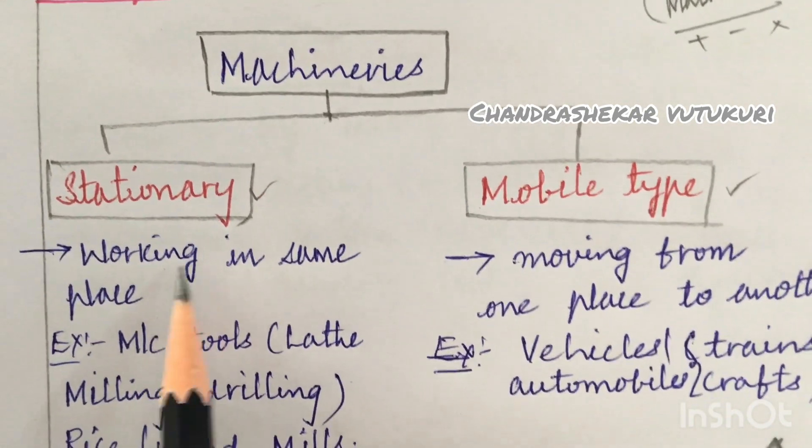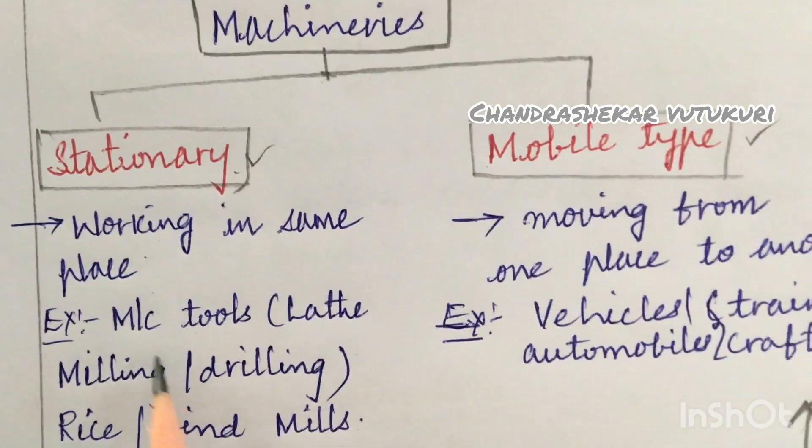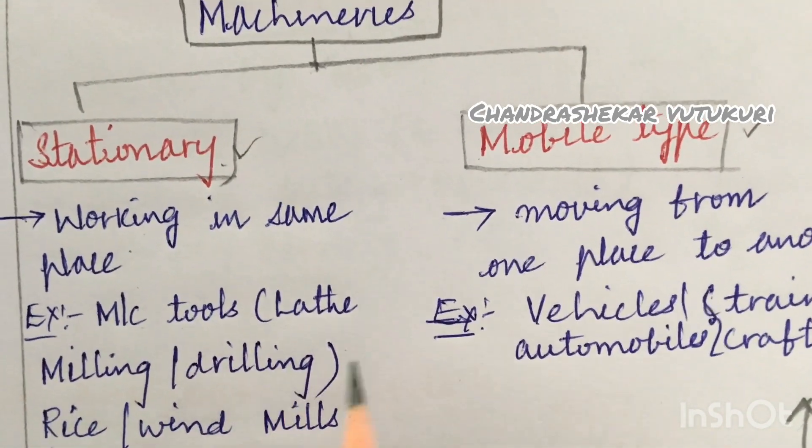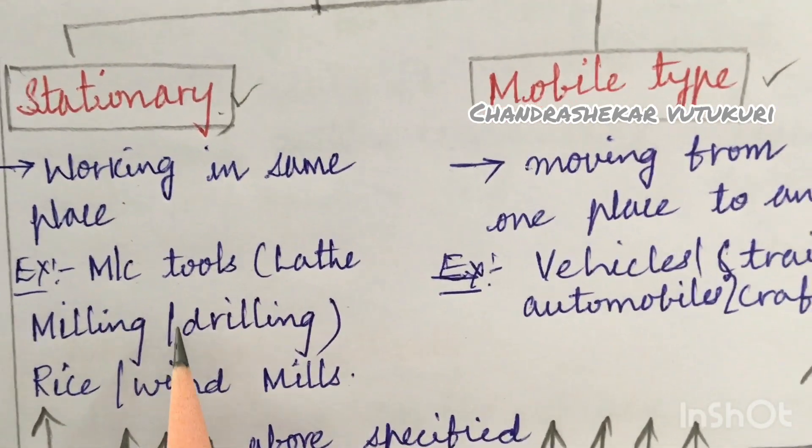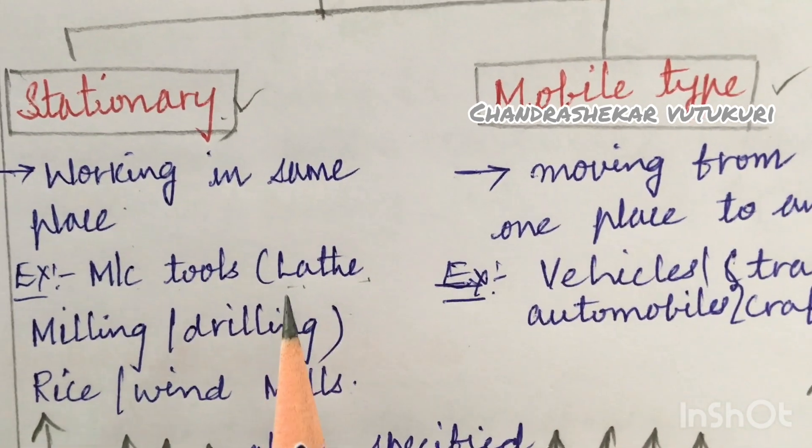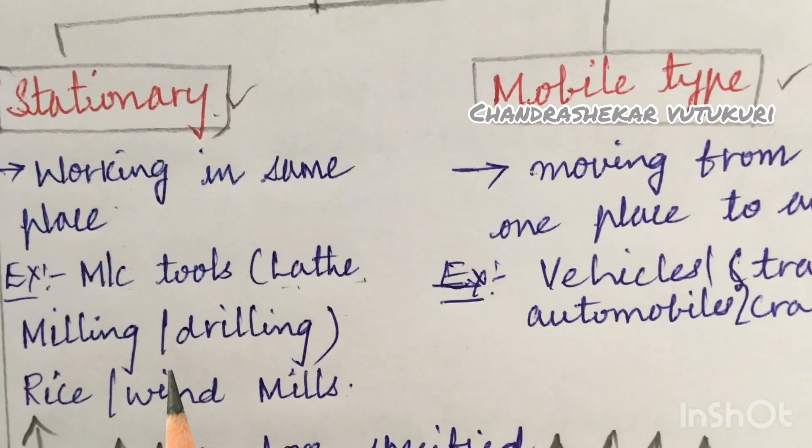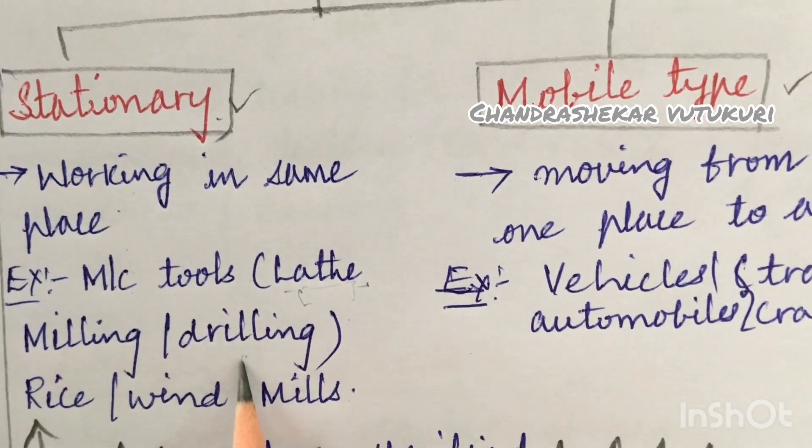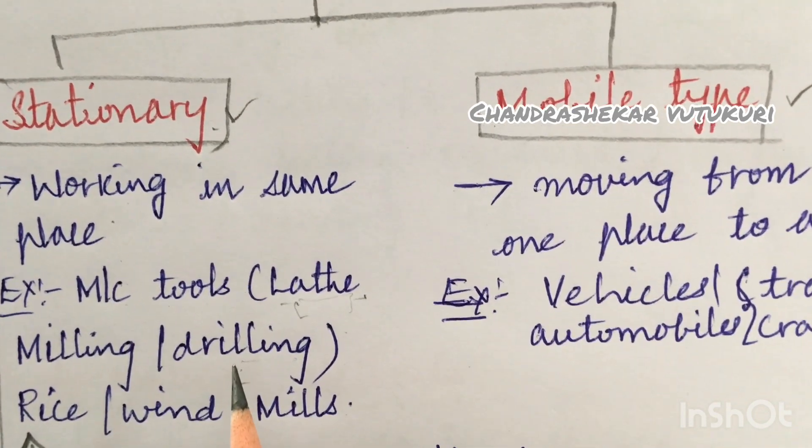First, stationary machineries and mobile type or movable machineries. Stationary means working in the same place. The machines which work in the same place are said to be stationary machinery. For example, in mechanical engineering concepts, machine tools like lathe machine, milling machine, drilling machine, planing machine, and rice mills and windmills - these all are common. If you take the lathe machine, the bed is stationary, that is a structure. Similarly for milling and drilling, the bed is a structure and it is stationary.